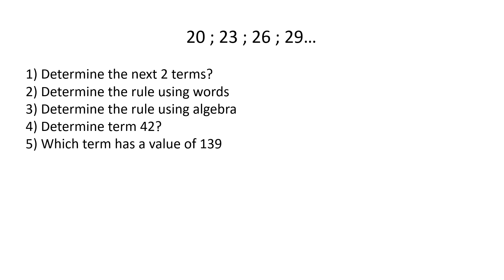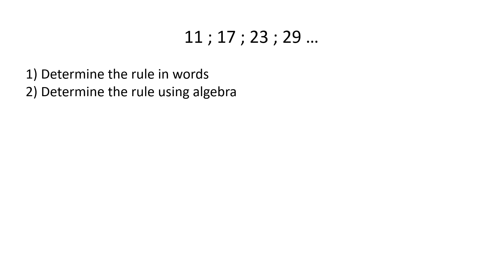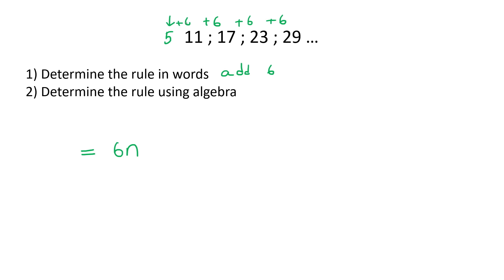Let's do one more. Determine the rule in words: we're adding six here, because 17 plus six is 23, and 23 to 29 is also add six. So the rule in words is: add six. For the algebraic rule, you take that number six and put an N, then figure out what the number before the sequence would be — that would be five, because five plus six is 11. So TN = 6N + 5.